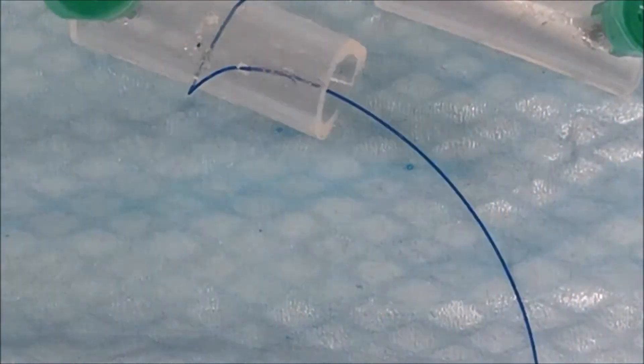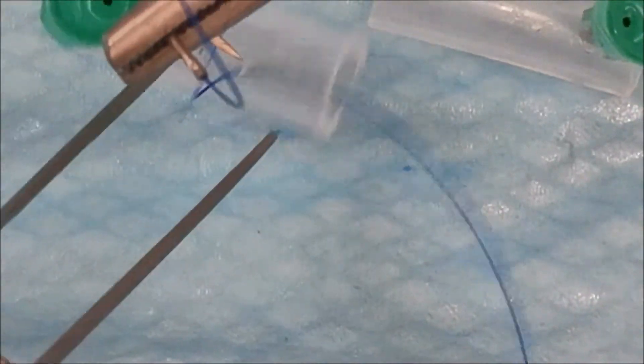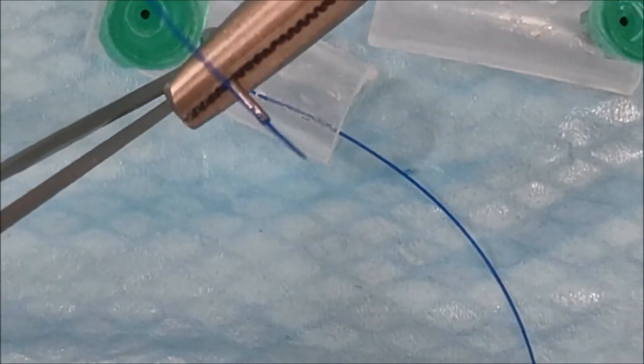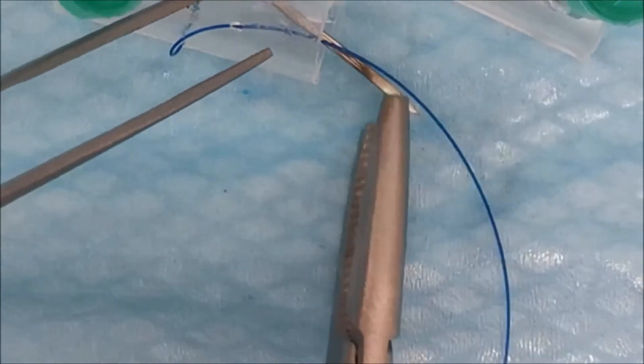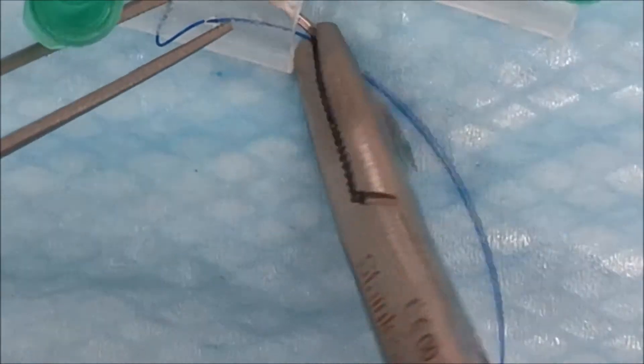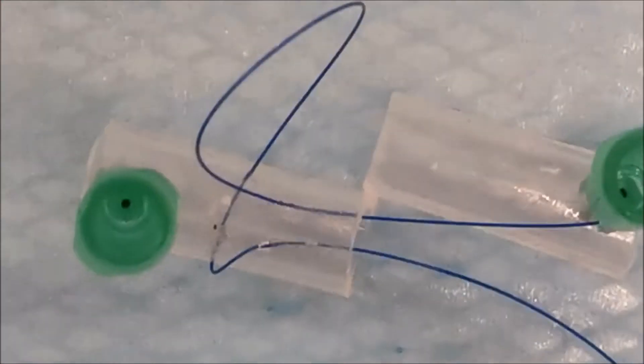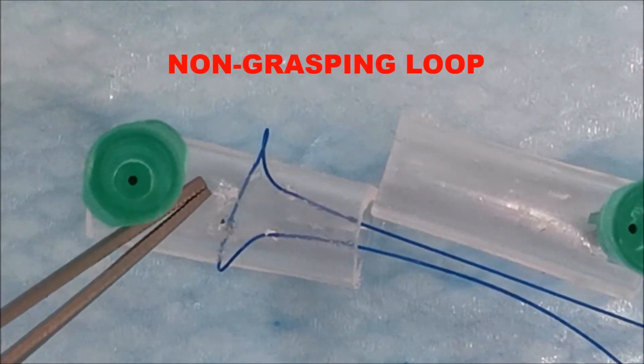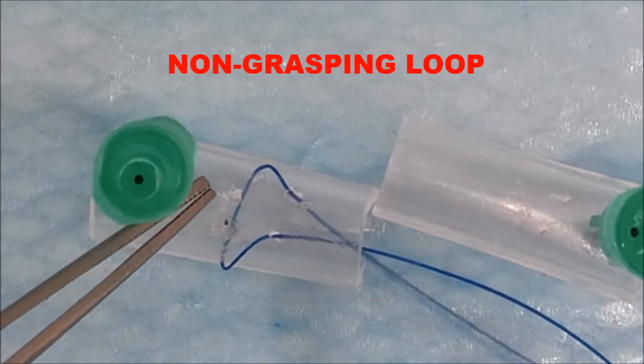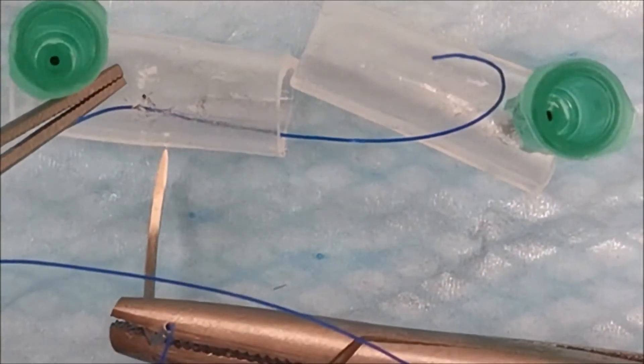If you take your transverse suture beyond the longitudinal suture, what you end up with is a construct that looks like this. As the transverse suture is not crossing the longitudinal sutures, you do not have a grasping loop on each side. This way you're not grasping tendon fibers in order to result in a good repair.